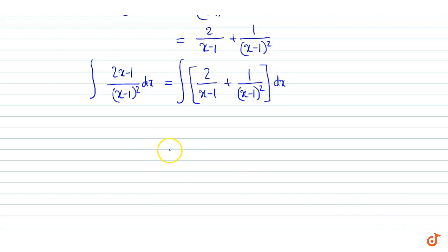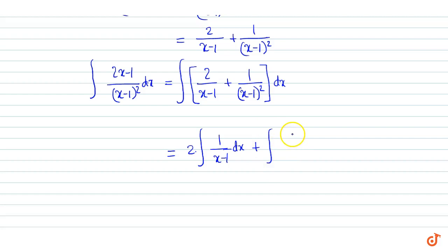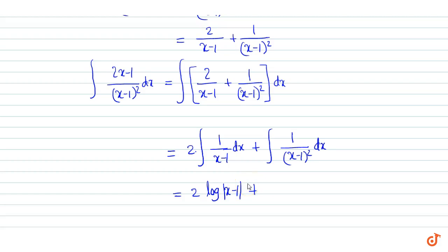We integrate term by term. This is equal to 2 times the integral of 1 by x minus 1 into dx, plus the integral of 1 by x minus 1 the whole square into dx. This equals 2 times log of x minus 1, minus 1 by x minus 1, plus C, where C is a constant of integration. That is our final answer.